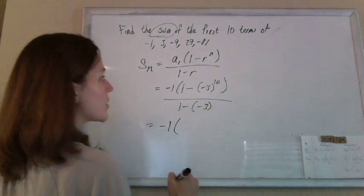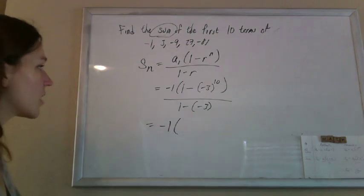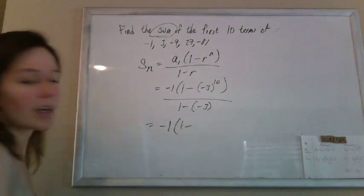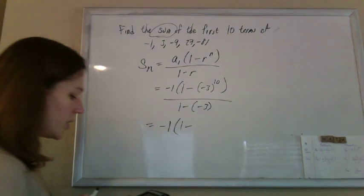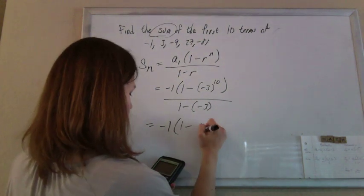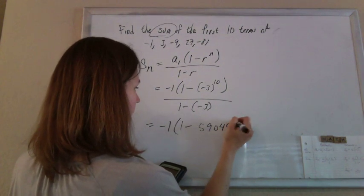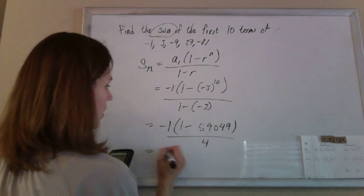Now all we have to do is punch this in on the calculator. Negative 3 to the 10th—3 raised to 10 is 59049—all over 4.